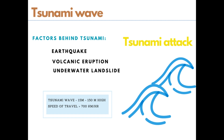A tsunami wave can be 15 meters high. The largest tsunami recorded to date had a height of 150 meters, and these waves can travel at a speed of more than 700 kilometers per hour.